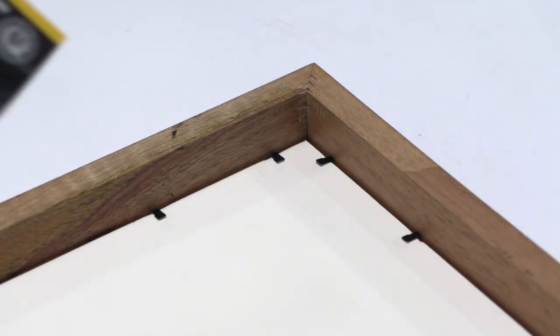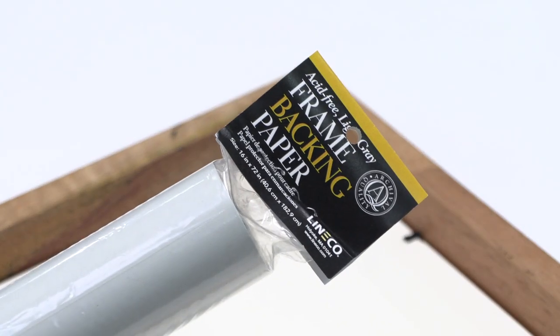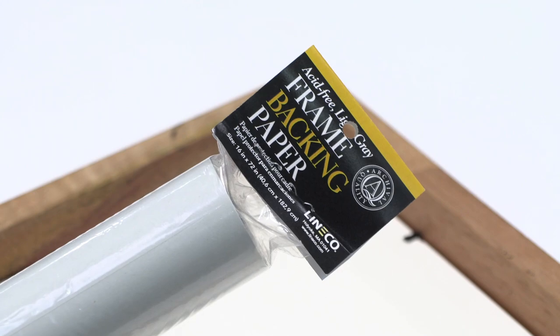For an additional level of protection, you can add frame backing paper. This paper defends your art and contents from dust and dents and adds a professional touch to your frame kit. See our link in the description of the video for more backing paper options.